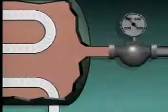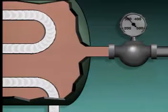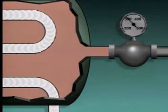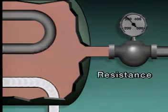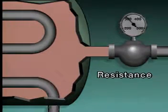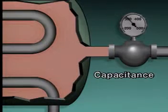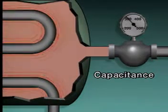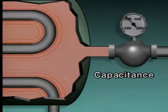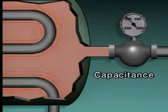Lag is caused by the combined effects of dead time and other process characteristics, such as resistance and capacitance. In this process, the transfer of heat from the steam to the water was delayed because of the resistance to heat transfer in the steam coils, and because of the water's capacitance, or the ability of the water to store heat. While resistance and capacitance are two of the major factors that affect a system's response to operating changes, they aren't the only factors.